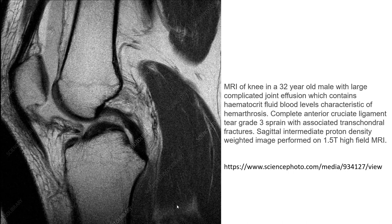MRI case example: 32-year-old male with a large complicated joint effusion, including a hematocrit fluid-blood level characteristic of hemarthrosis, complete anterior cruciate ligament tear, and an associated transchondral fracture. Sagittal intermediate proton density MRI was performed on a 1.5 Tesla system.